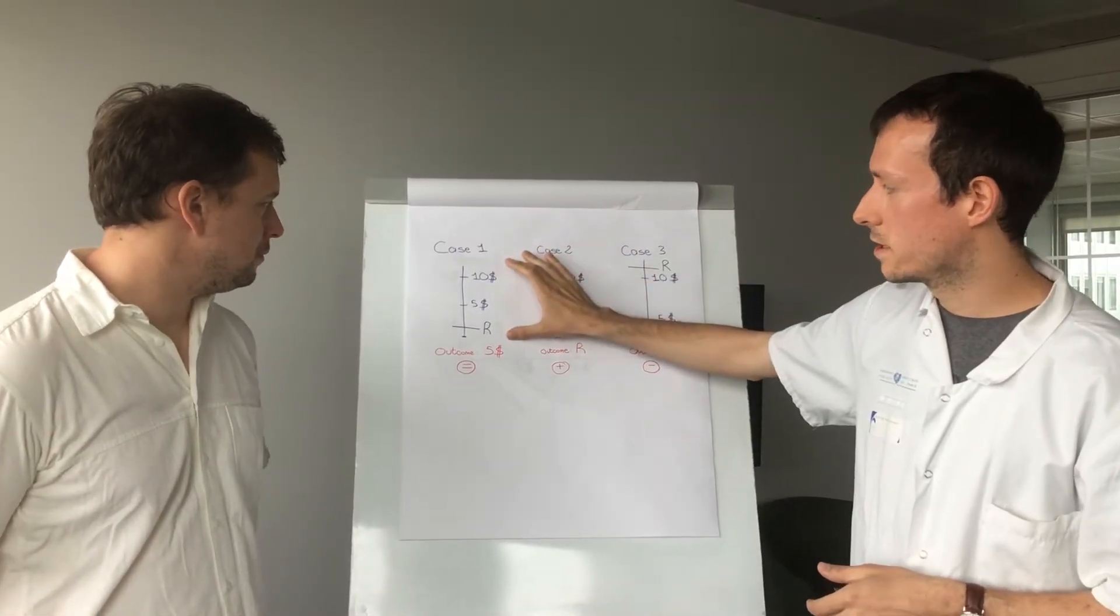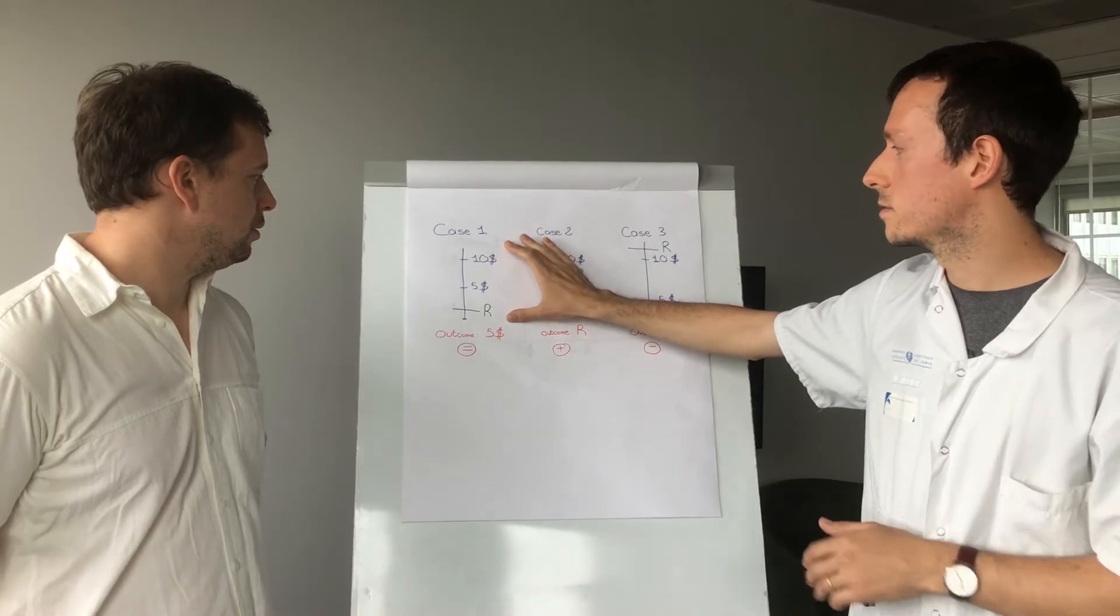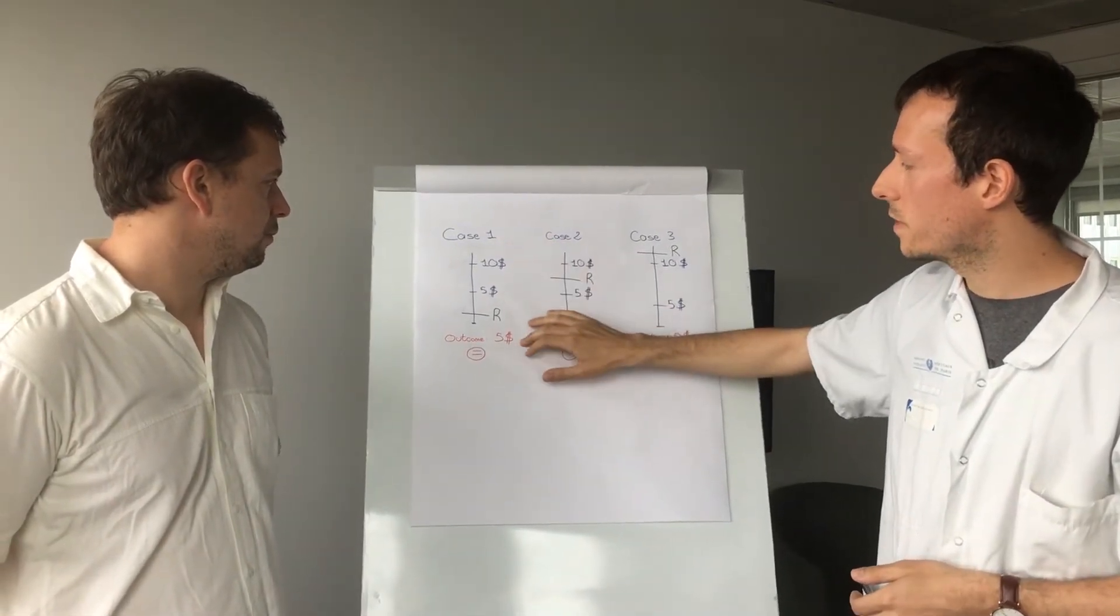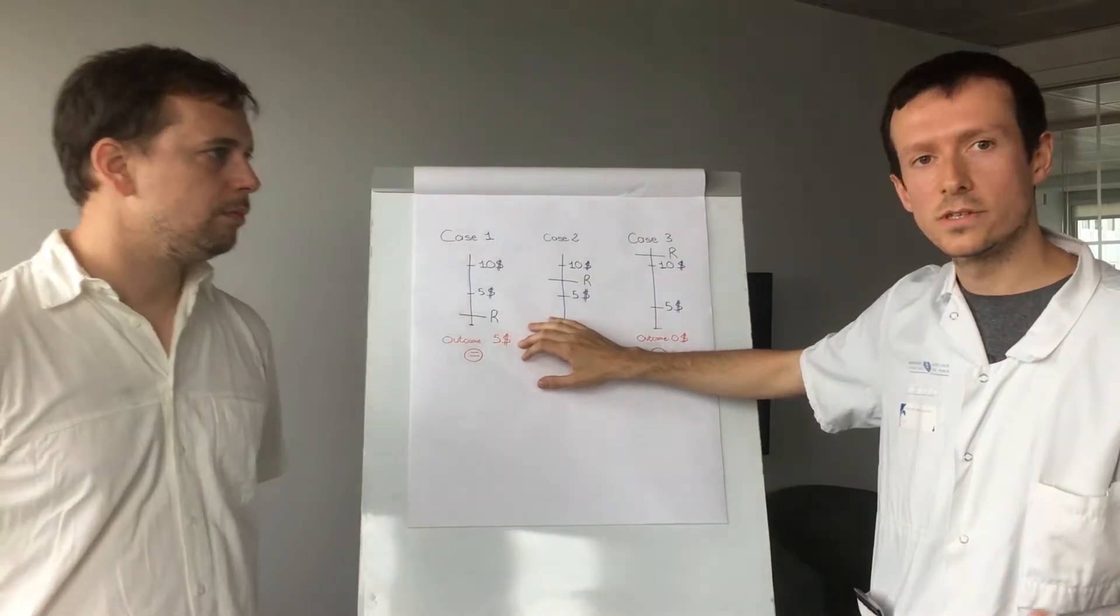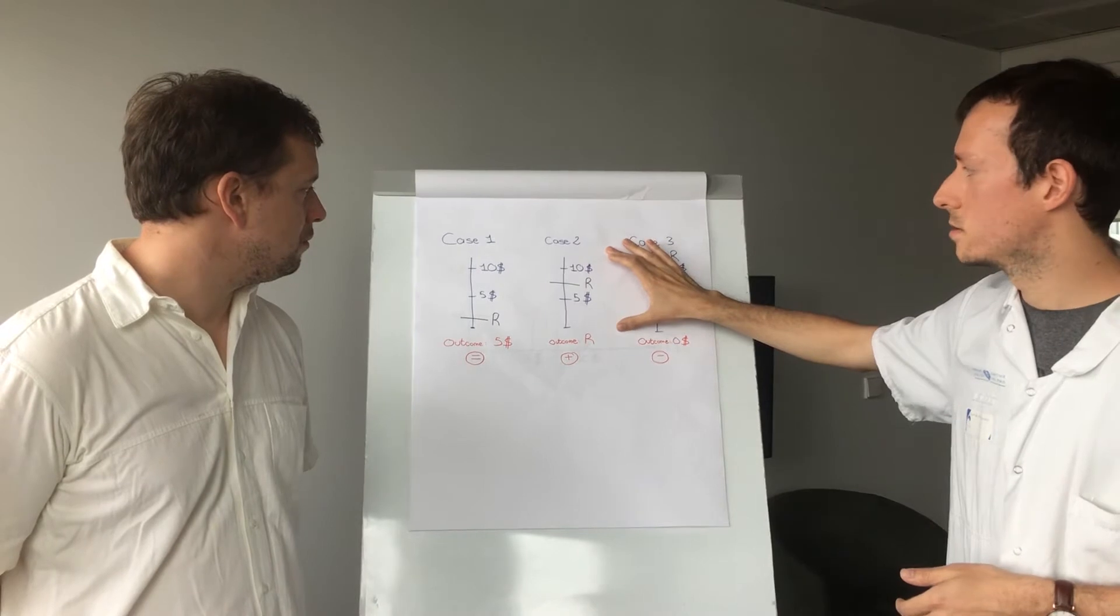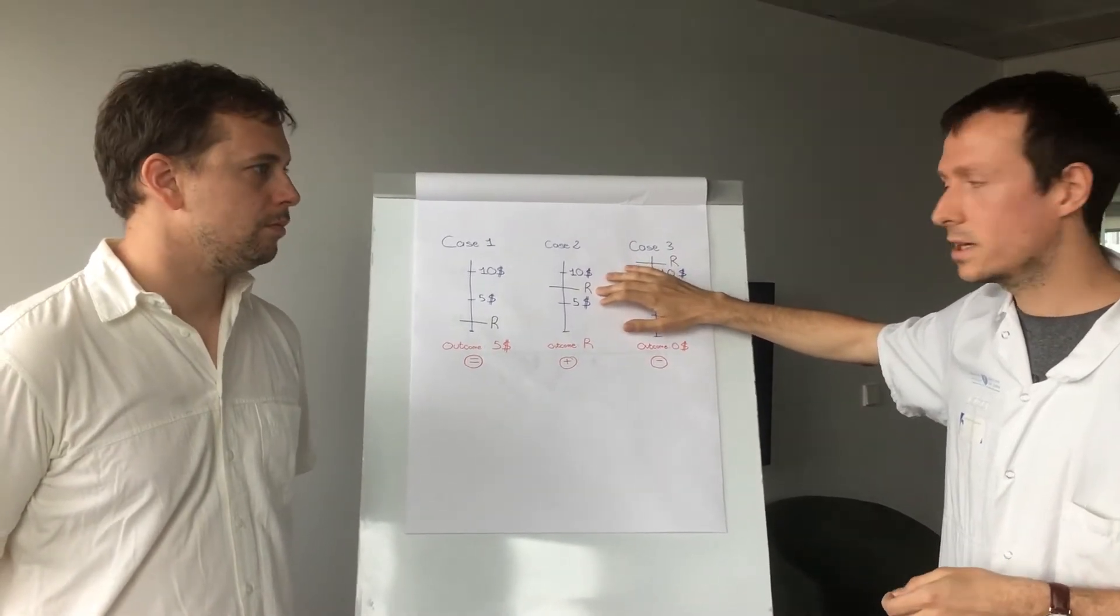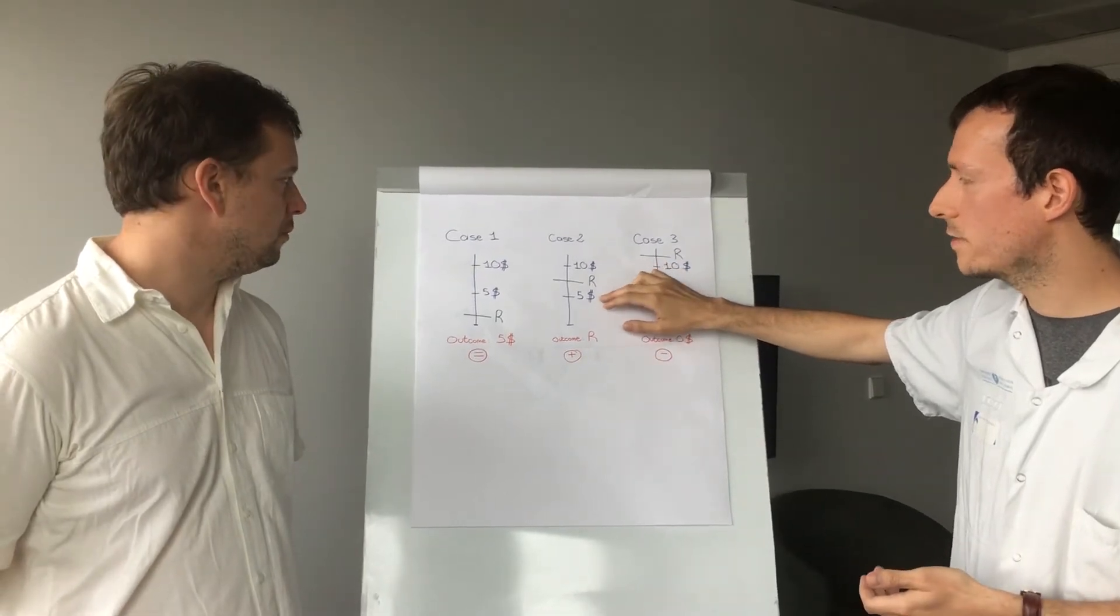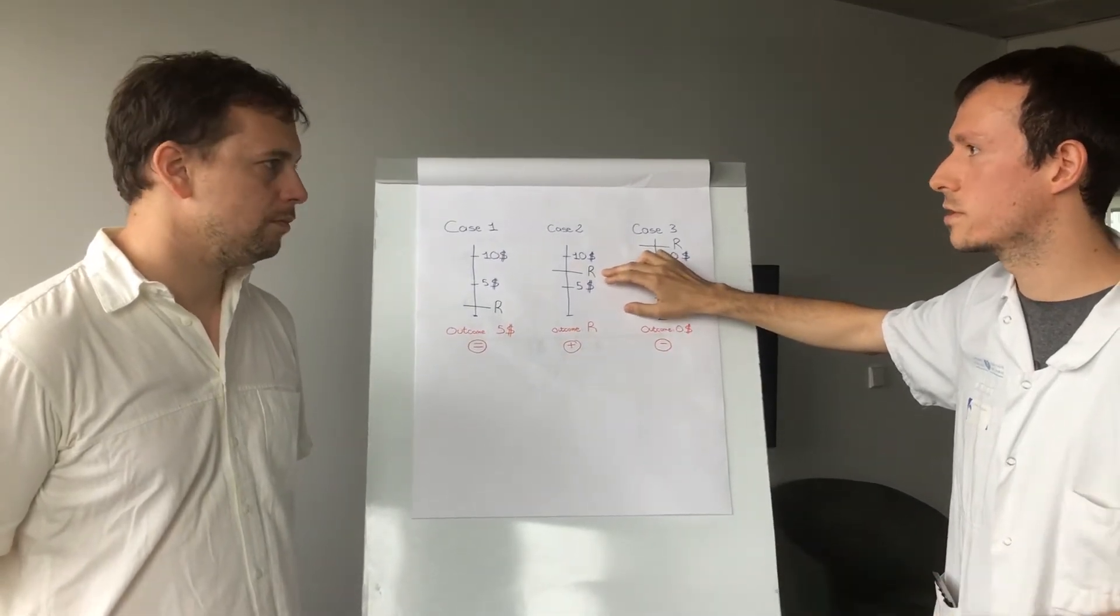In the first case here, the reserve price is below the second bid. And so, the reserve price is actually useless and the closing price of the auction is equal to $5, as in the no reserve price case. And with the third case, which is actually the worst case for you, the reserve price is too high and is above the first bid.